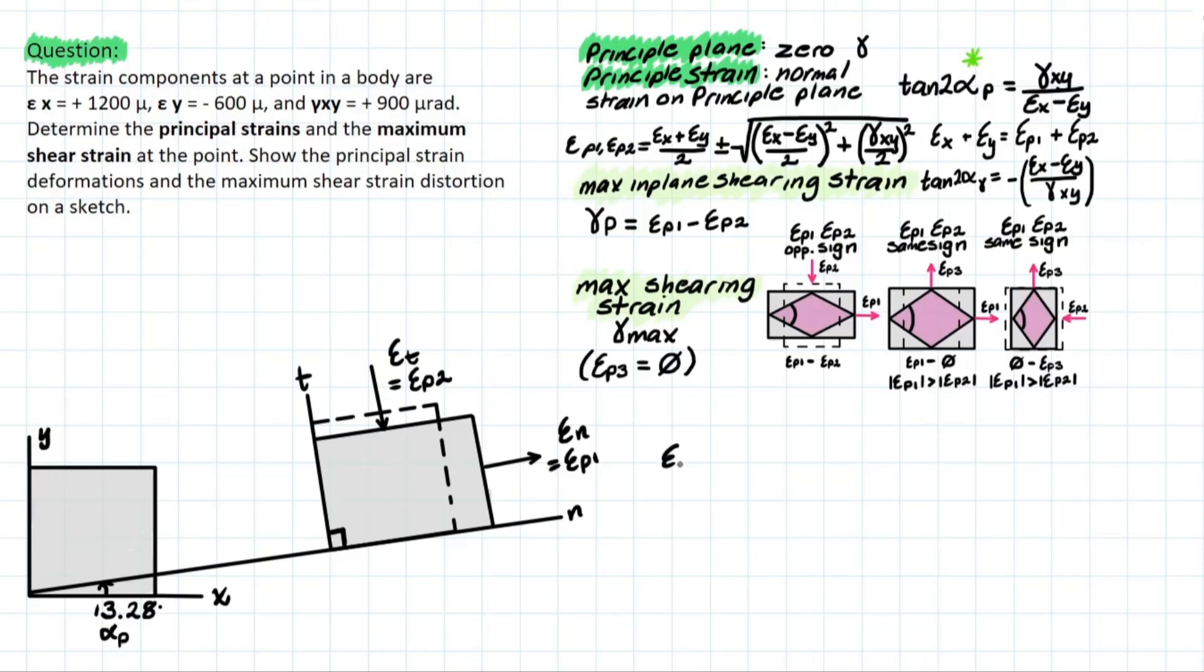Let's solve first for εP1, or normal strain P1, which is with respect to the N direction. It's pretty much just plugging in the values that we already know. So you have 1200 plus minus 600, and we divide that by 2. And for P1, we are adding, and we're going to take the root: 1200 minus negative 600, all divided by 2, that is squared, and then we're considering the shearing strain initially, which is the 900 over 2, that is squared as well.